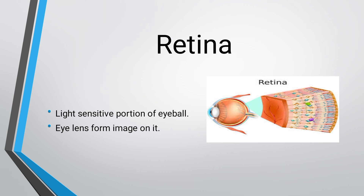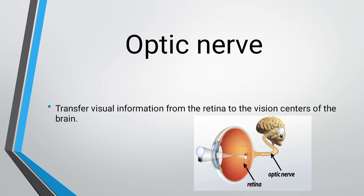Next are the optic nerves. When the retina forms the image, the visual information is transferred to the brain via the optic nerves. The retina forms an inverted image, and the optic nerves carry the visual image to the brain, where it is corrected and we see the object.